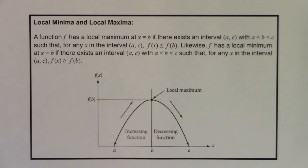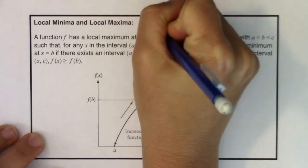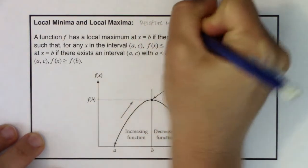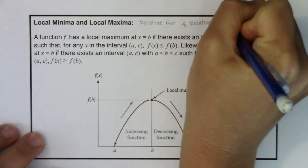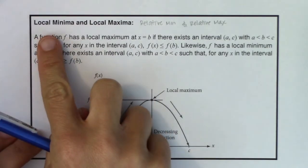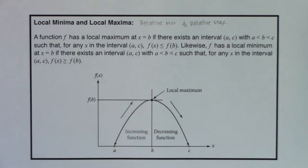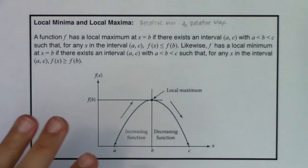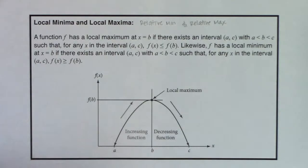Hey Math 31, let's take a look at the definitions for local minima and local maxima. Sometimes you'll hear these referred to as relative mins and relative maxes. So we actually have two vocab terms: local min and local max, and relative min and relative max. In the last example in this section we'll also talk about absolute max and min, sometimes referred to as global maxes and mins.